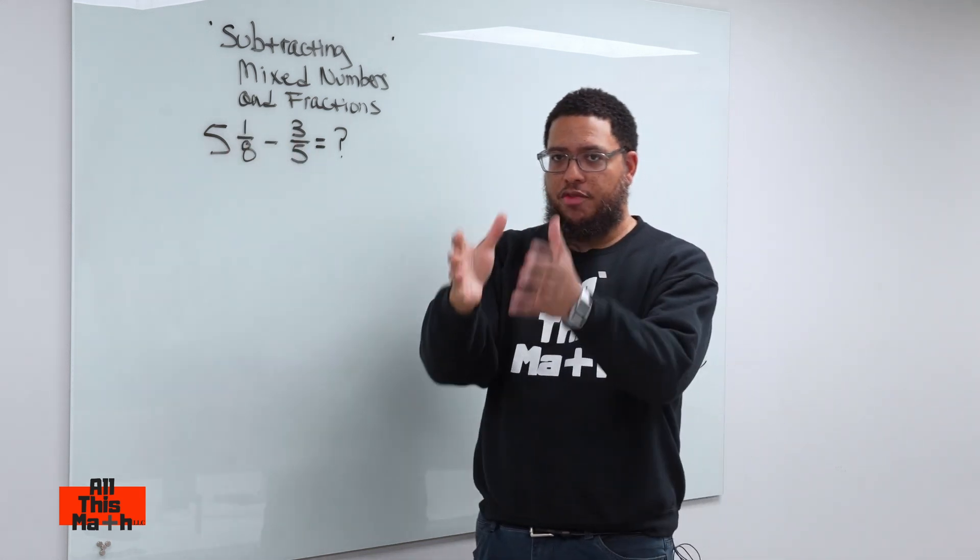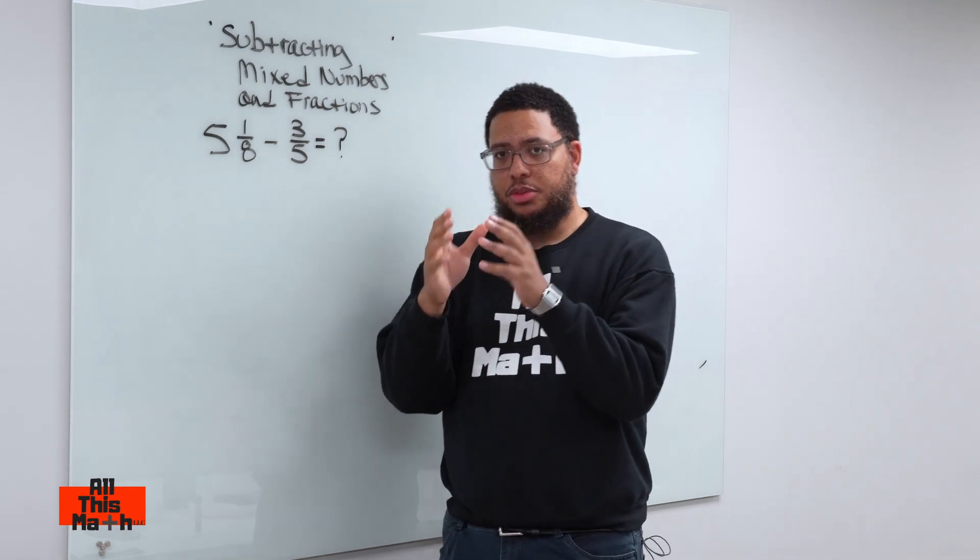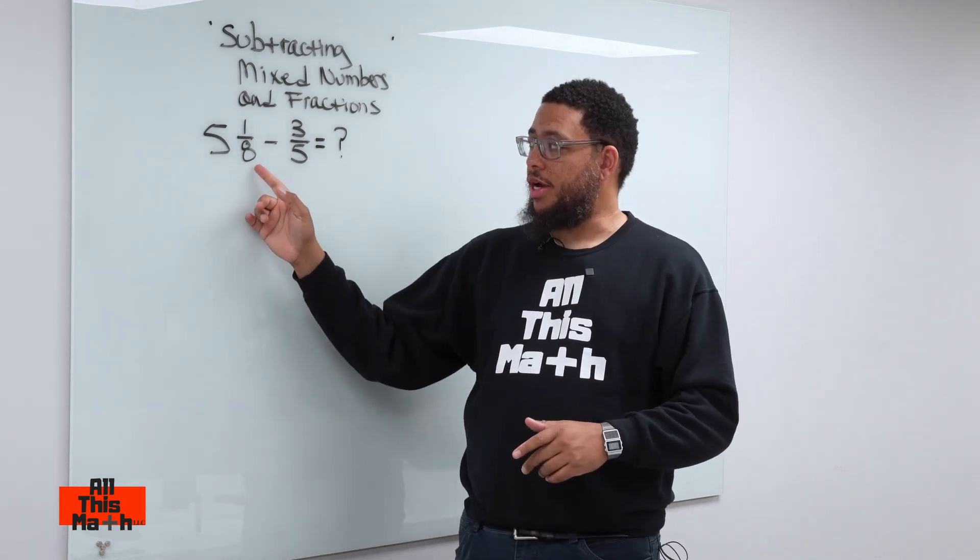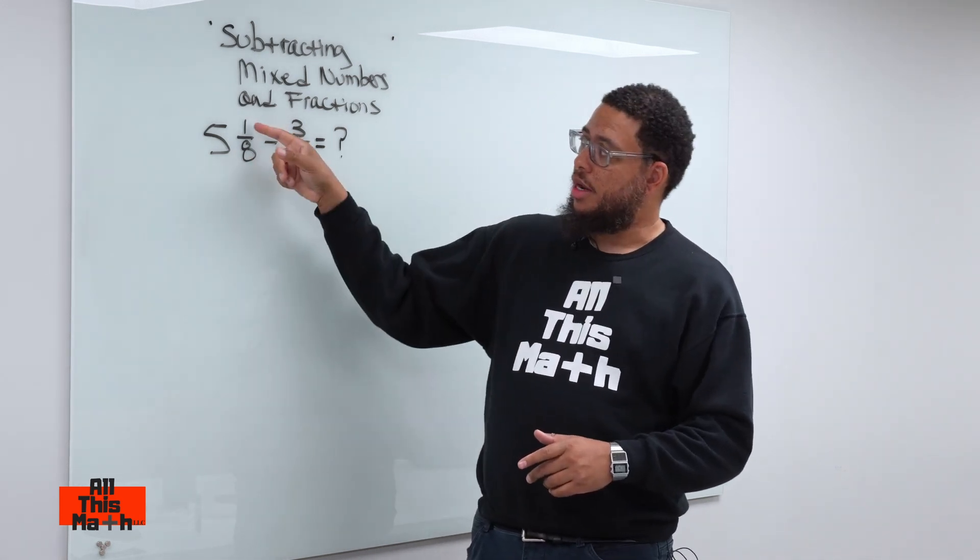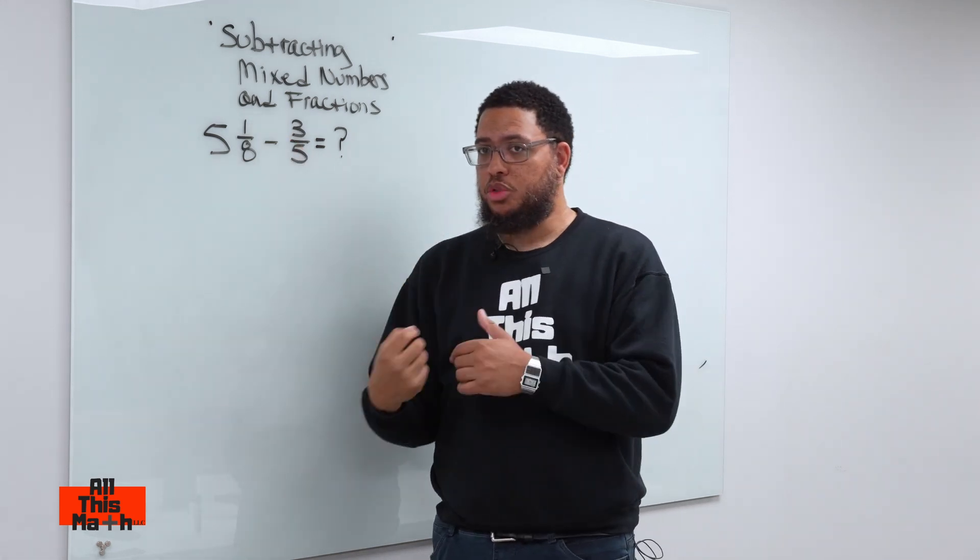So, I got 5 1/8, that means I got five whole objects, and then another object is broken down into eight equal parts—that's why my denominator is an eight. And then, out of those eight equal parts, I'm only focused on one of those parts, or I only have one of those pieces.